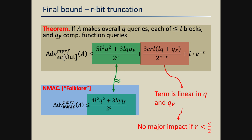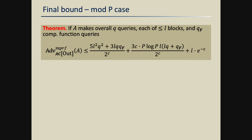Going back to our original application where we had reduction mod p — which was the case for the signature scheme — we can apply our theorem generically and get a similar bound. The main message is that everything is fine.